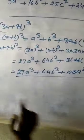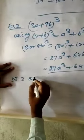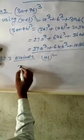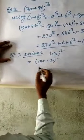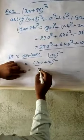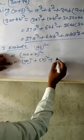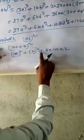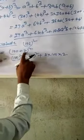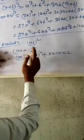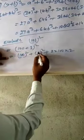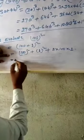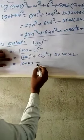Next, evaluate 101 whole square equals 100 plus 1 whole square. Using identity A plus B whole square equals A square plus B square plus 2AB. A equals 100, B equals 1. So 100 square plus 1 square plus 2 into 100 into 1 equals 10,000 plus 1 plus 200 equals 10,201.